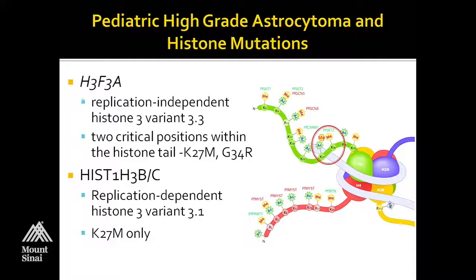The relevant lysine residues here are K27, which can be acetylated or methylated. Depending on the acetylation or methylation status, that tells whether the DNA should be open or closed — in other words, whether you should read that area of the DNA or not. The lysine 36, which is just two residues away from this G34, is thought to be what's influenced by that mutation, and this has important implications for how the DNA is read by various transcription factors.